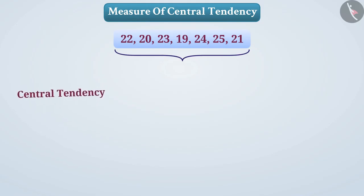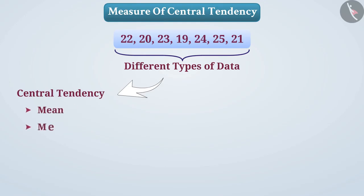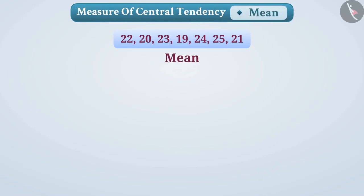We use different types of central tendency to interpret different types of data, such as mean, median, and mode. In this video we will discuss the mean. We usually know the mean by the name of average; it is also called arithmetic mean.